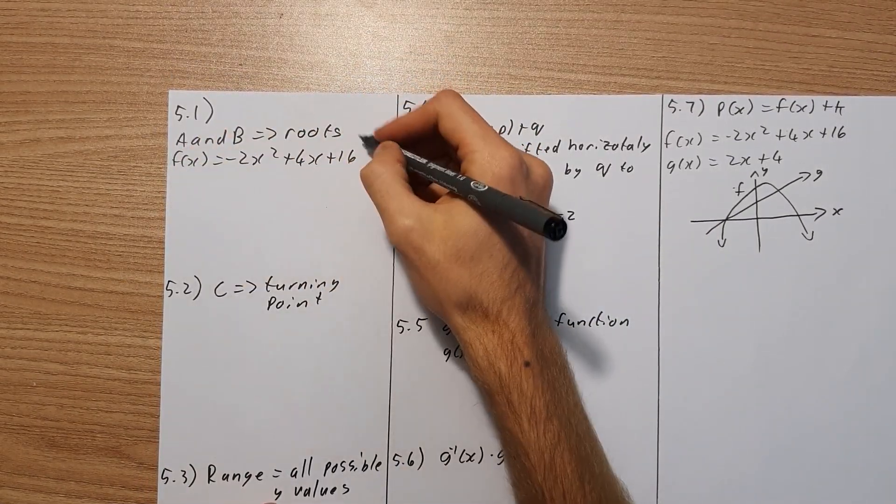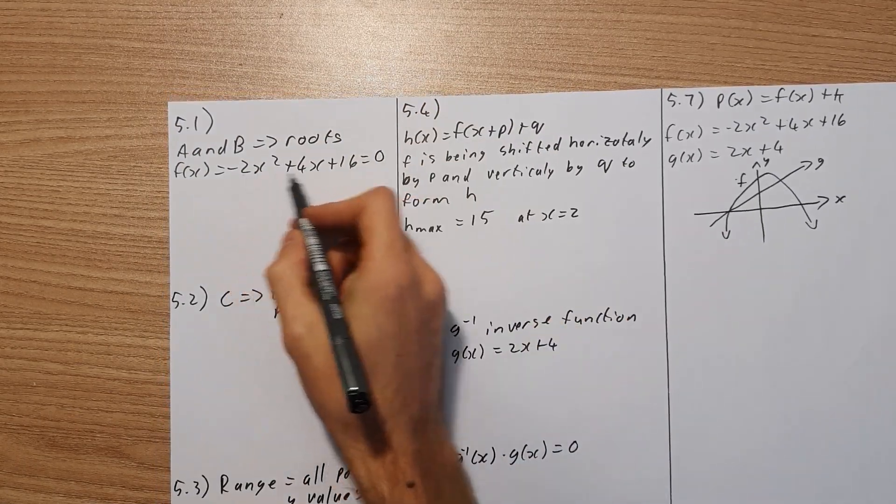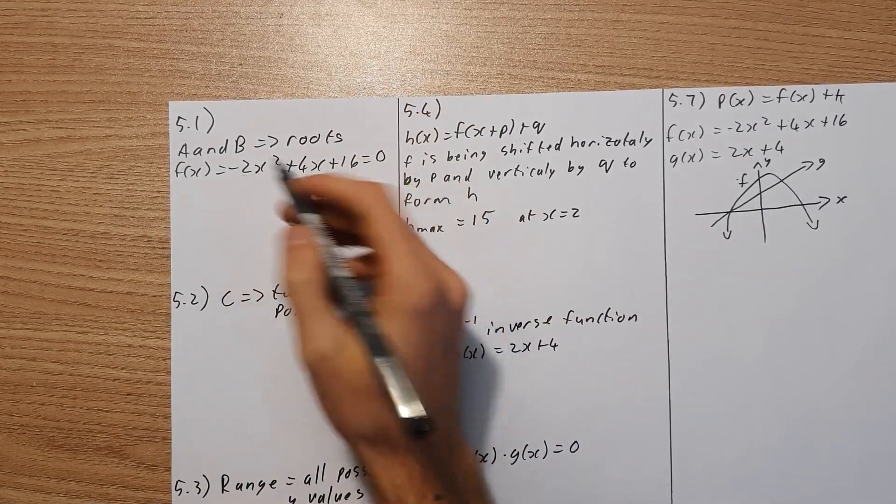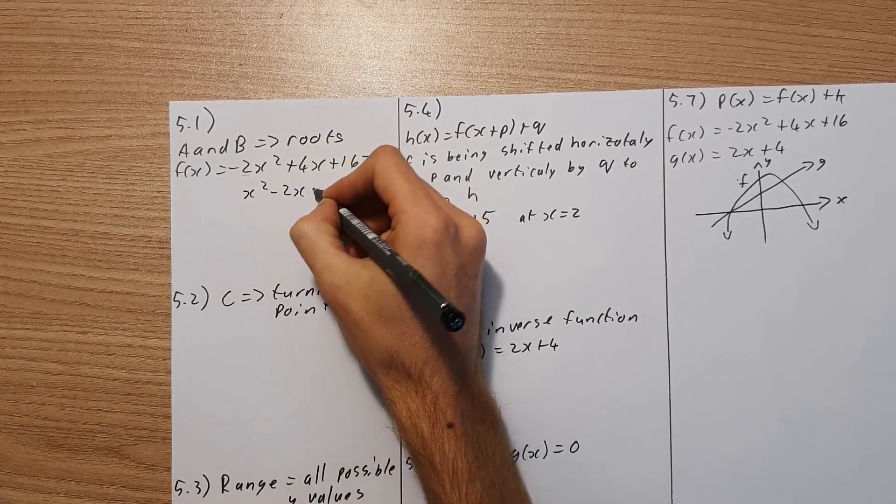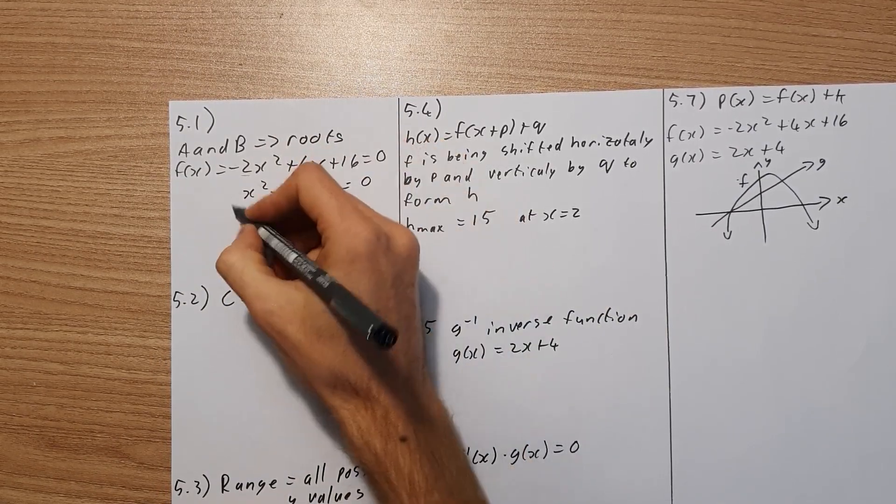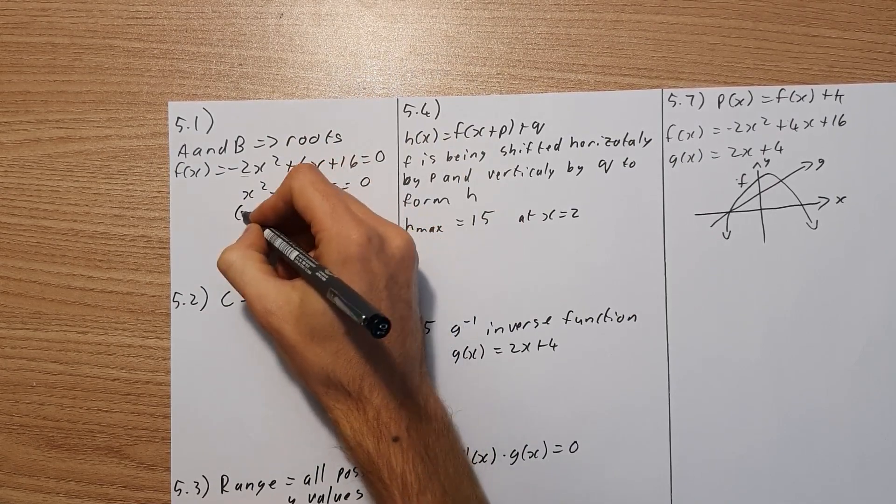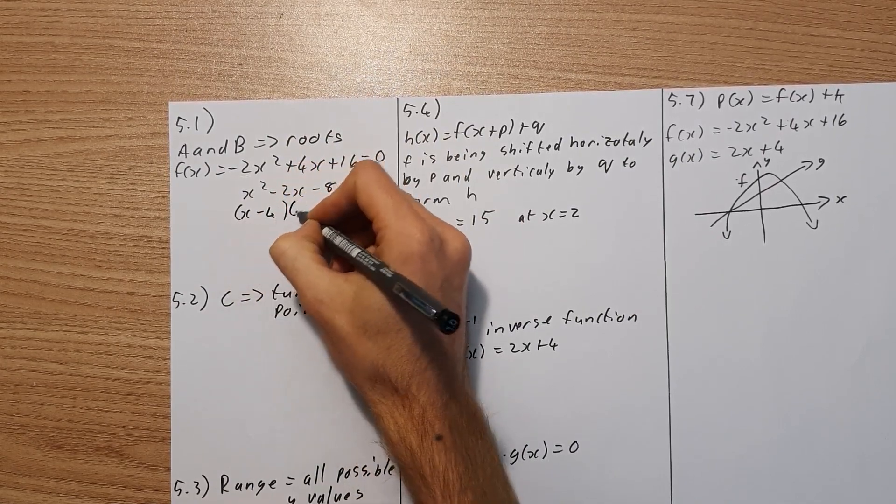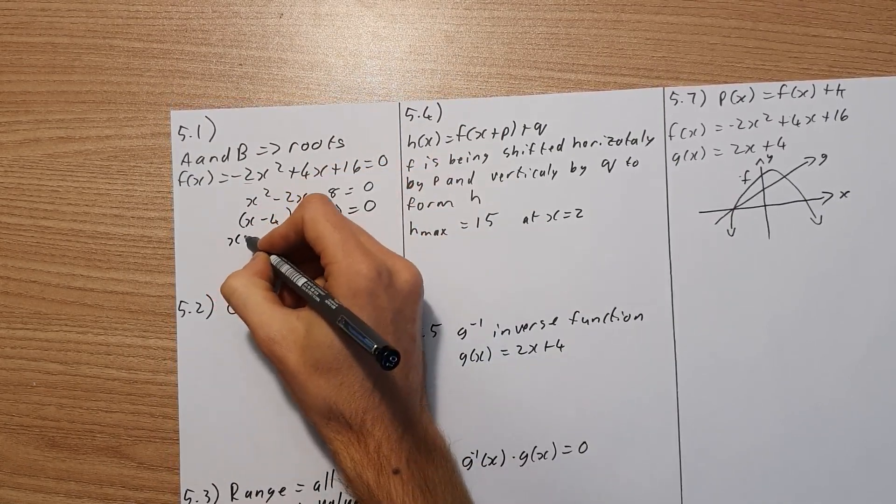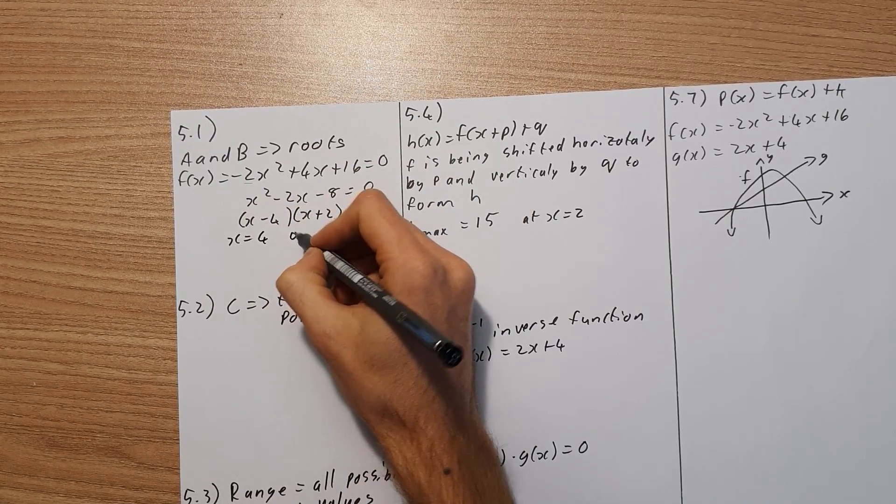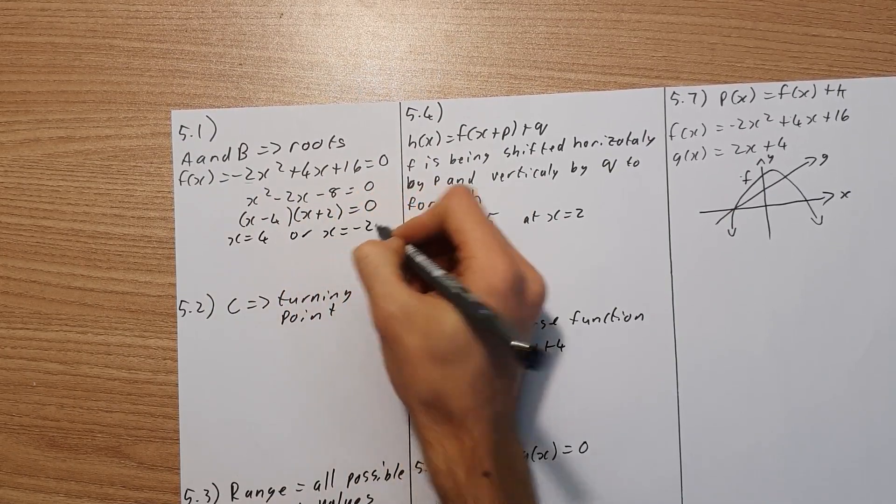We've got to take the function f of x and set it equal to 0. So I'm going to simplify this by dividing by negative 2. We're going to get x squared minus 2x minus 8 equals 0. If you factorize that, you'll get x minus 4 and x plus 2, which equals 0. So we can see that x equals 4 or x equals negative 2.